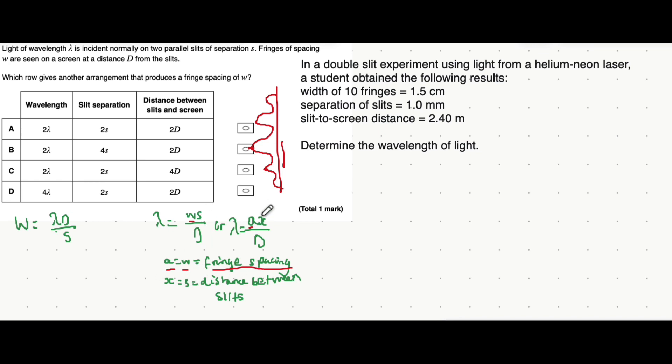X can be replaced with S, which is the distance between the double slits. So if you have light going through double slits and they diffract, the distance between the centers of the slits is what this distance represents.